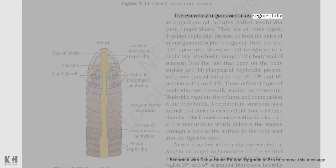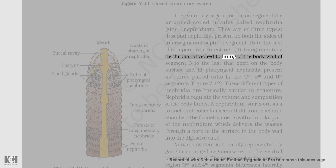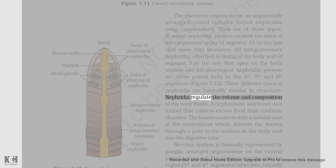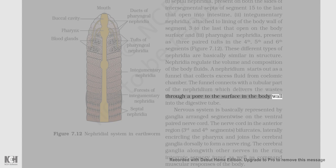The excretory organs occur as segmentally arranged coiled tubules called nephridia (singular: nephridium). They are of three types: septal nephridia, present on both sides of the intersegmental septa from segment 15 to the last, that open into the intestine; integumentary nephridia, attached to the lining of the body wall of segment 3 to the last, that open on the body surface; and pharyngeal nephridia, present as three paired tufts in the 4th, 5th, and 6th segments (figure 7.12). Nephridia regulate the volume and composition of the body fluids. A nephridium starts out as a funnel that collects excess fluid from the coelomic chamber. The funnel connects with the tubular part of the nephridium which delivers the wastes through a pore to the surface in the body wall or into the digestive tube.